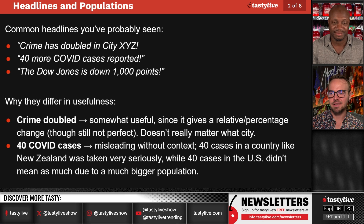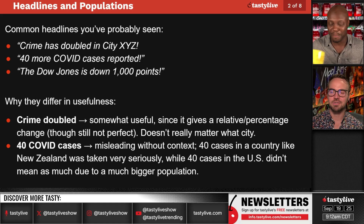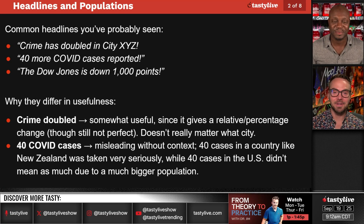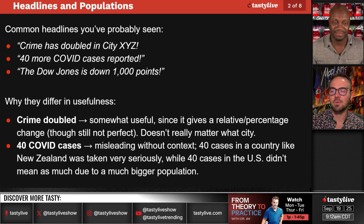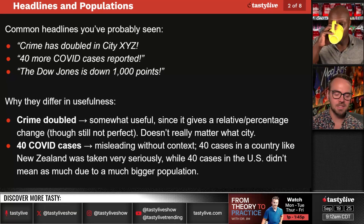So, common headlines you've probably seen: crime has doubled in city X, Y, and Z — how about crime has doubled in Chicago? I hear that all the time. We go on the road and people are like, how are you still alive, aren't there shootings? There are, but they're in other areas, it's not everywhere. Also: 40 more COVID cases reported, the Dow Jones is down a thousand points — what does that really mean?